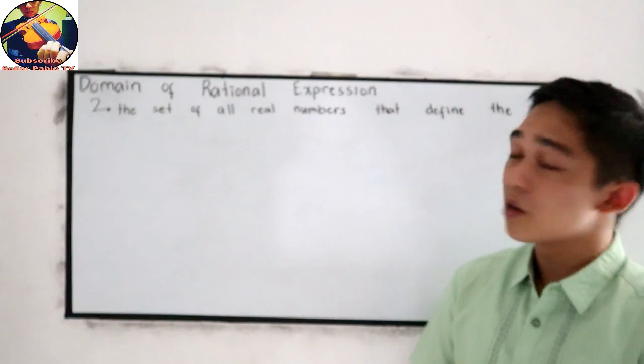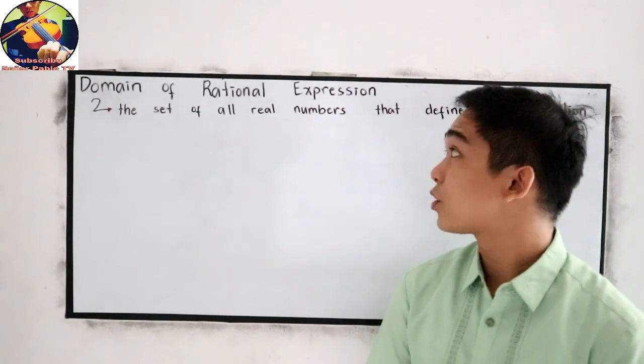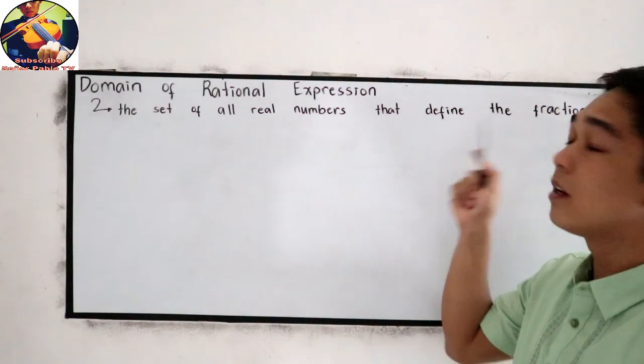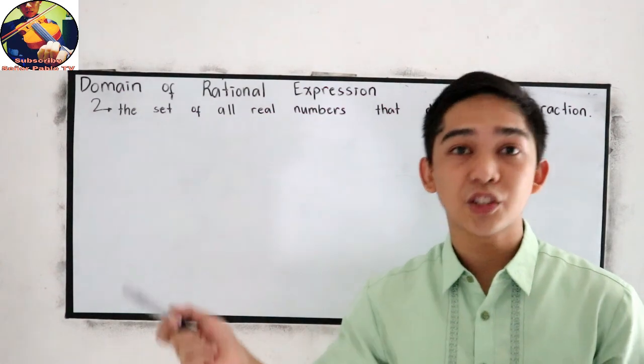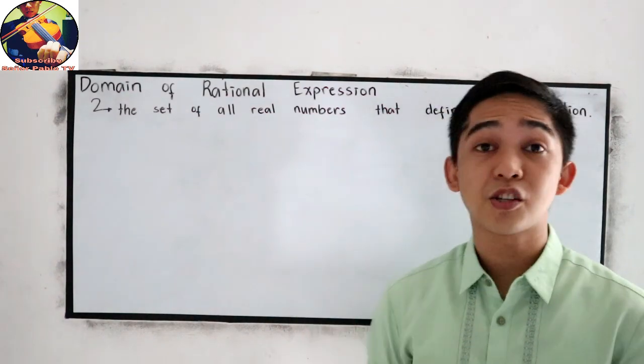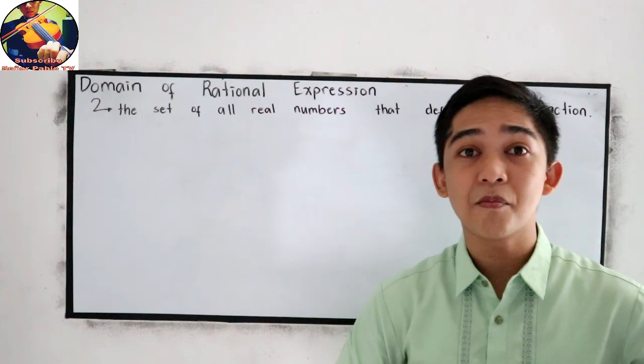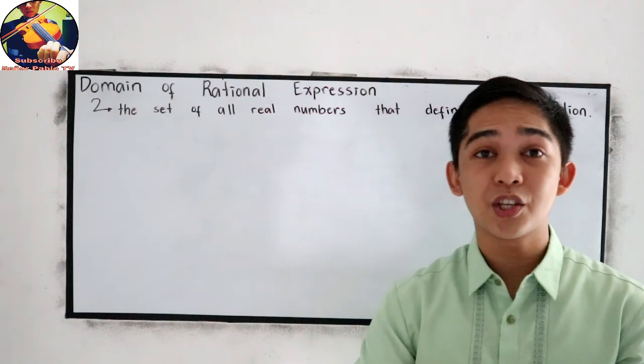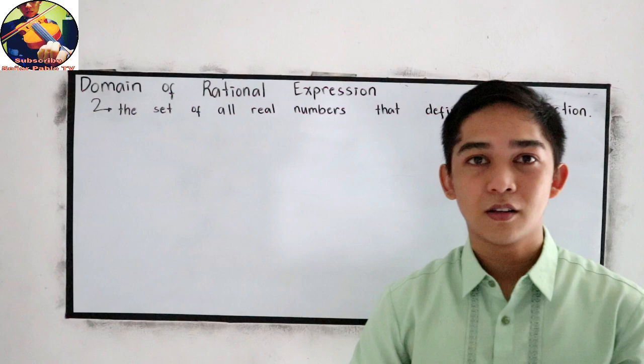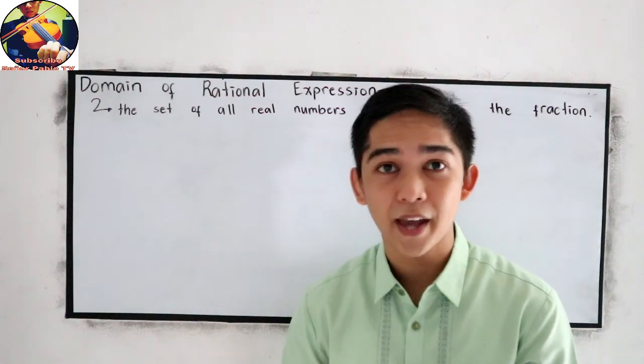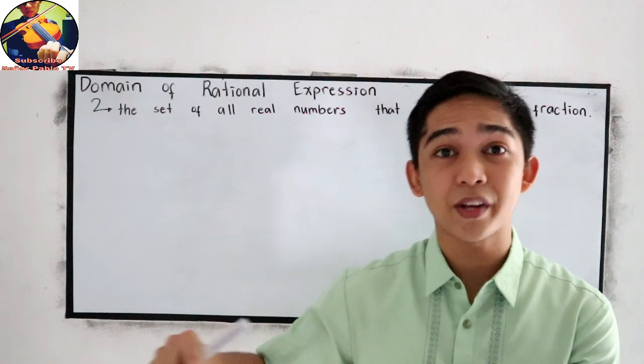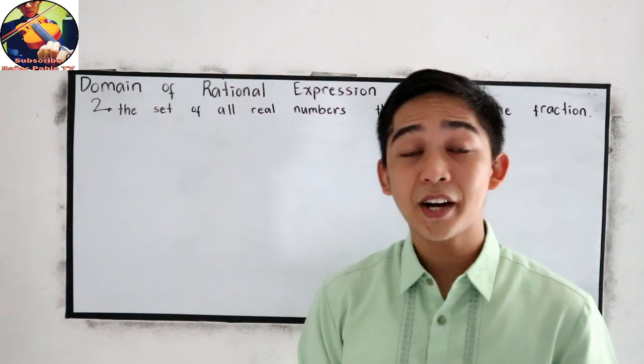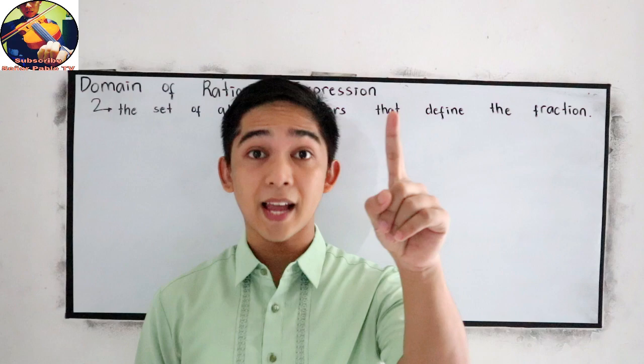First, let us define what is Domain of Rational Expression. It is the set of all real numbers that define the fraction. In our introduction of Rational Expression, we have those numbers that do not satisfy our conditions in Rational Expression that will make the expression undefined. So we are going to find those restricted values for our Rational Expression. To further understand, let's have our first example.